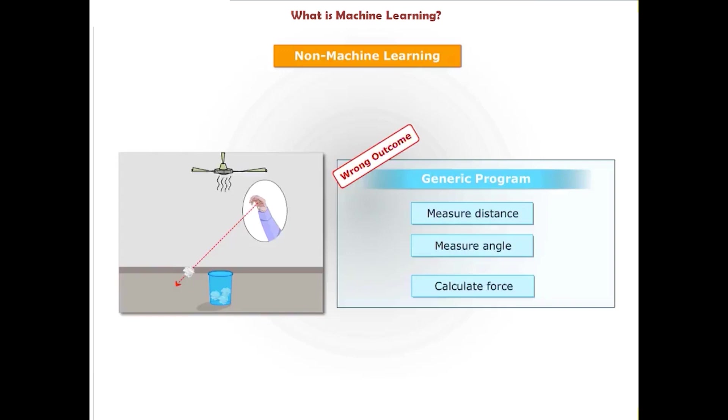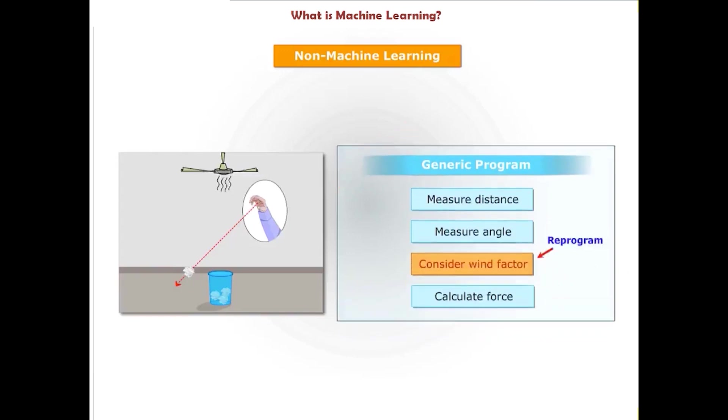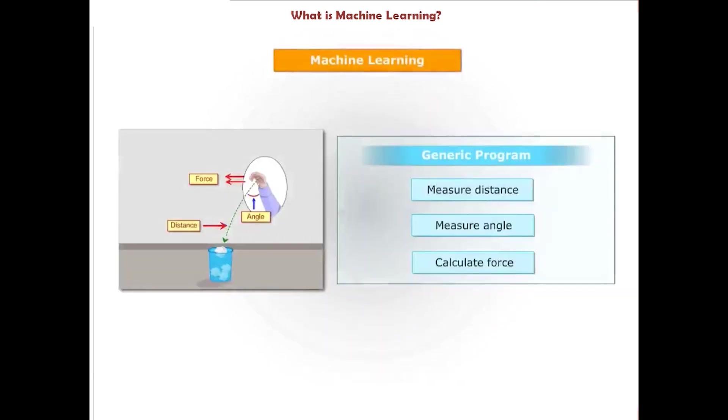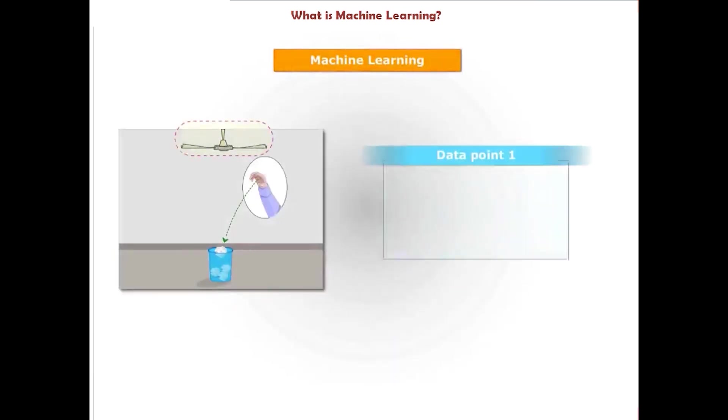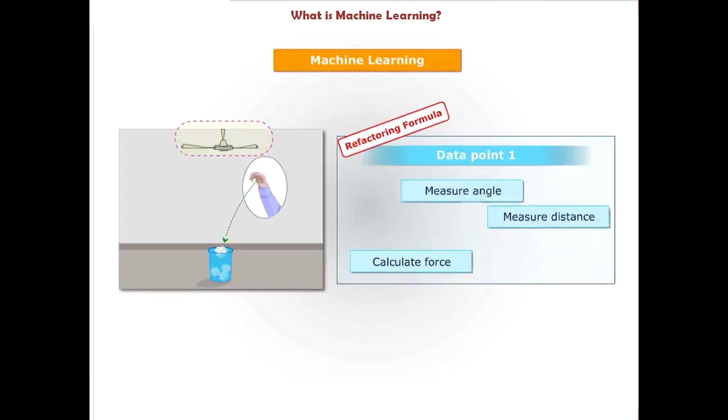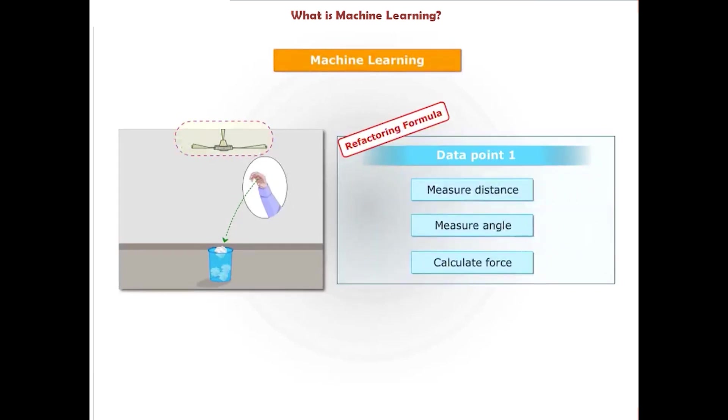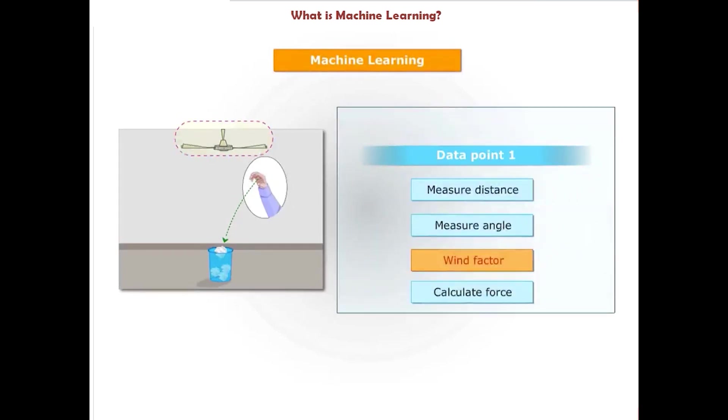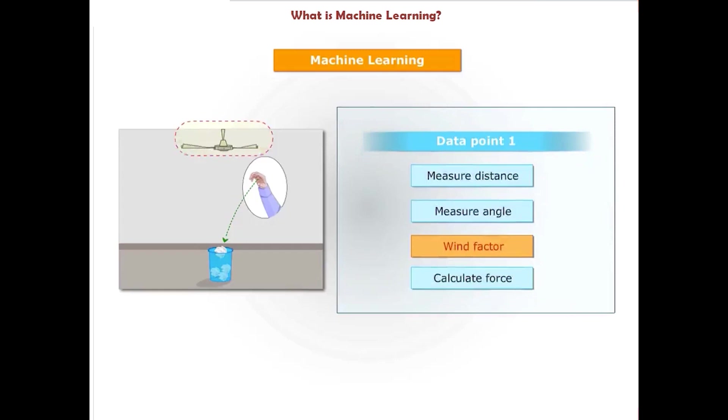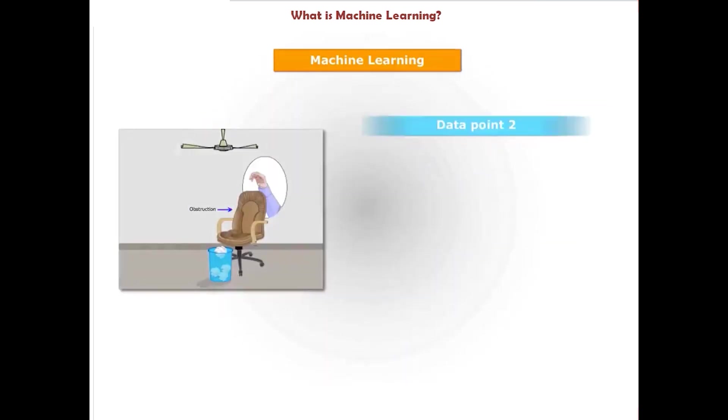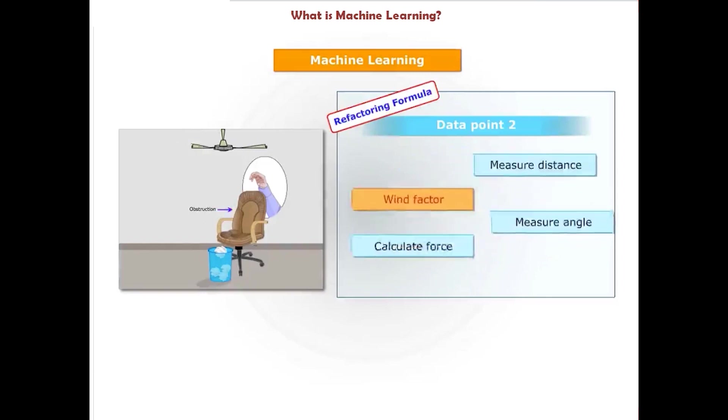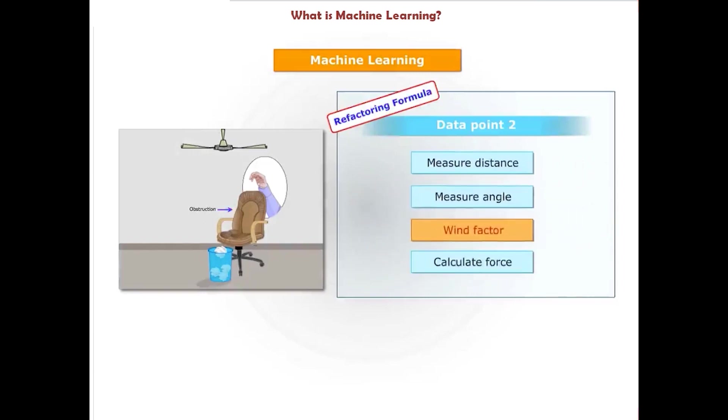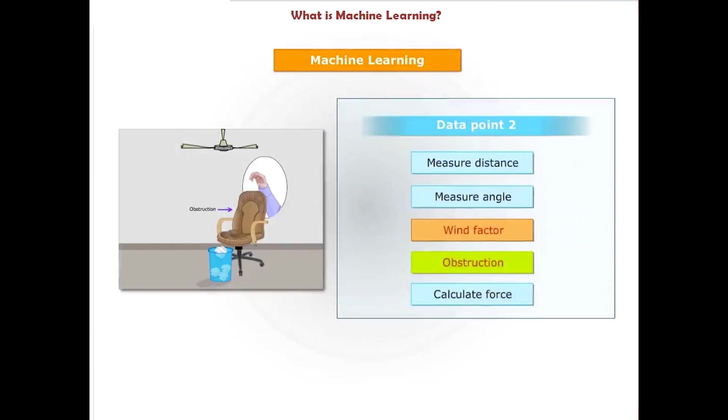For the same example, a machine learning program begins with a generic formula, but after every attempt or experience it refactors its formula. As the formula is continuously improved using more experiences, the outcome too is improved. This self-improvement in calculating the targeted outcome based on new set of experiences is the core of machine learning.